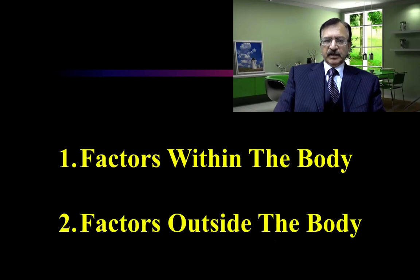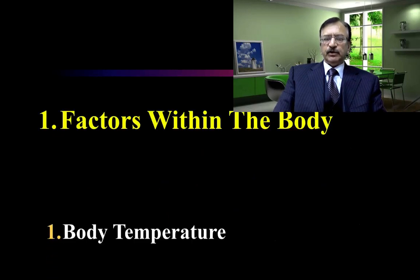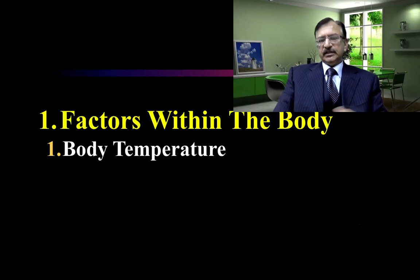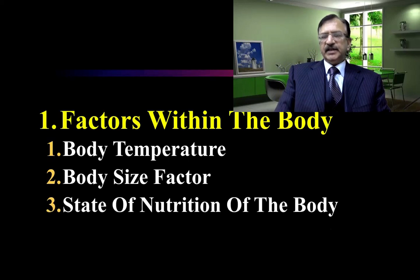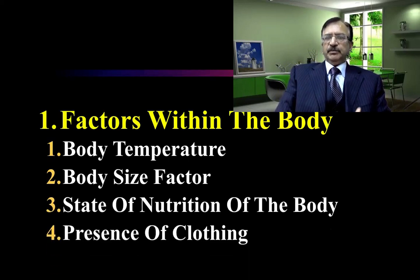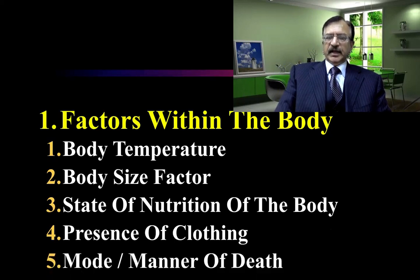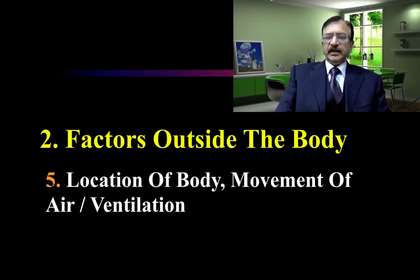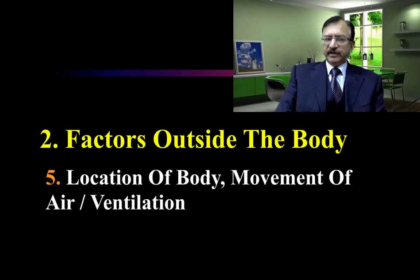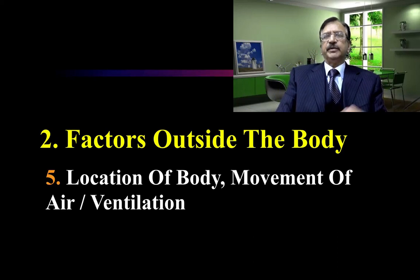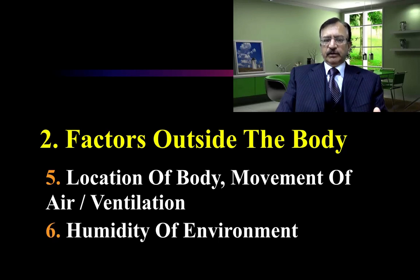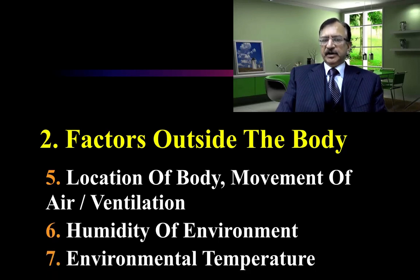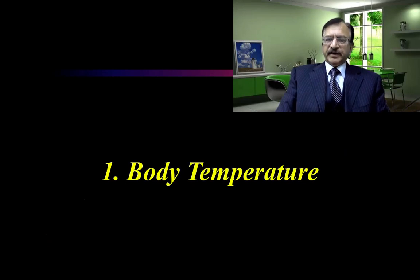Factors influencing the rate of cooling include factors either within the body or outside the body. Factors within the body are: body temperature at the time of death, body size factor, state of nutrition, presence or absence of clothing, and mode or manner of death. Factors outside the body include: location of the body, movement of air or ventilation, whether the body is in a closed environment or open field, humidity of the environment, and environmental temperature. These are the most important factors responsible for affecting the rate of cooling.